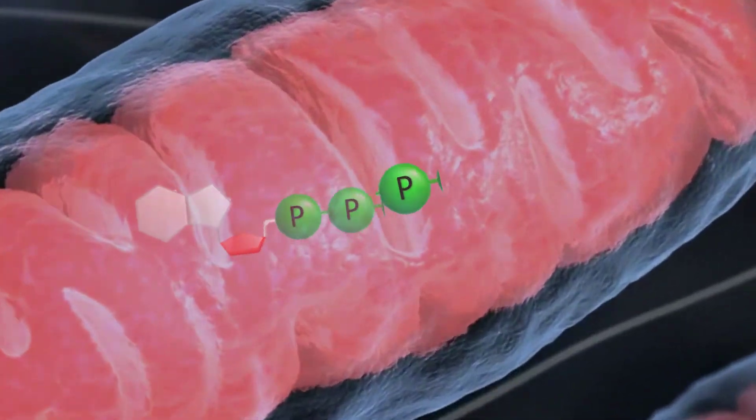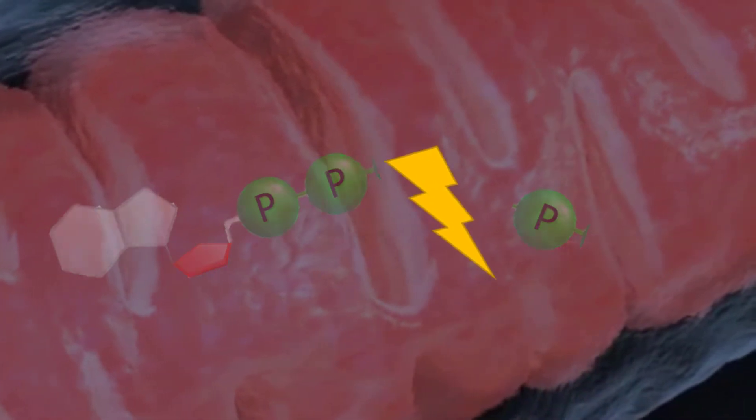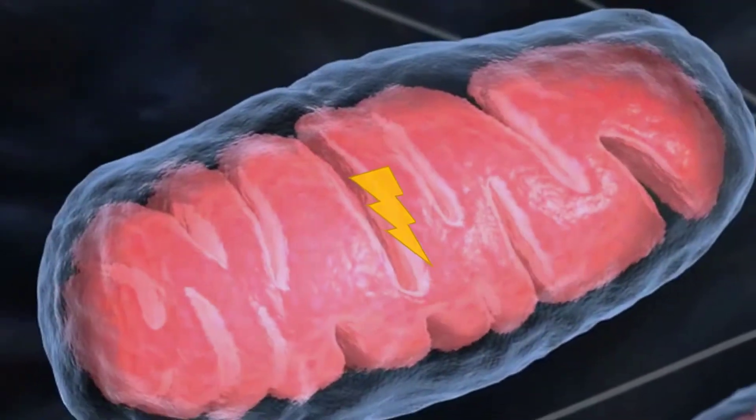Then, the ATP is broken down, or catabolized, and a controlled amount of energy is released, which is used by the cell to perform a particular job.